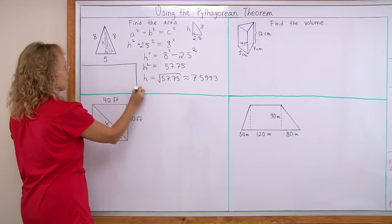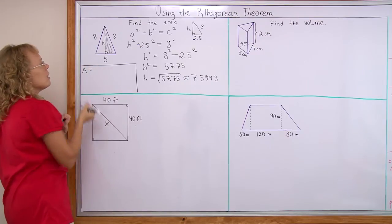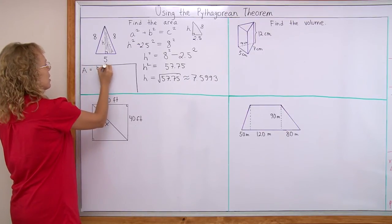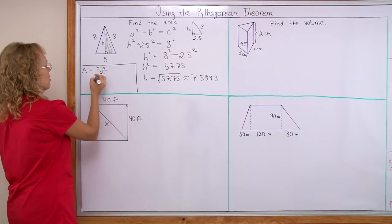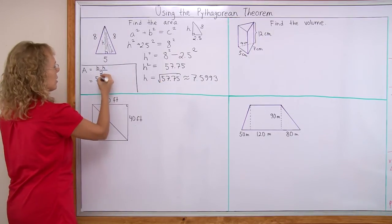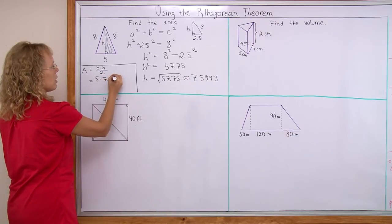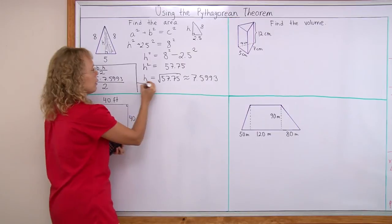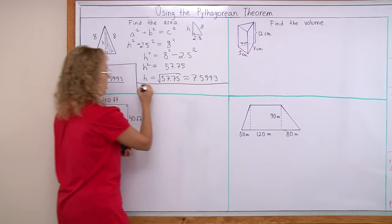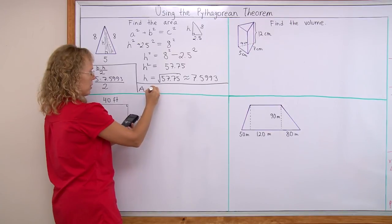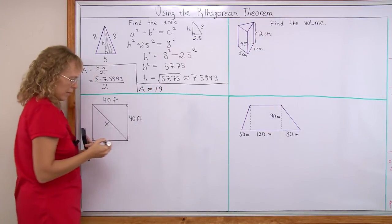And I'm running out of space, but the area is base times height divided by 2, right? Base times height divided by 2. So this would be 5 times height, which is that number, 7.5993 divided by 2. The area is approximately 19 square units.